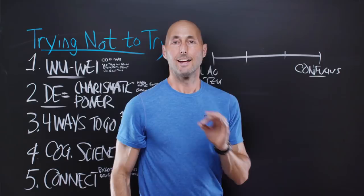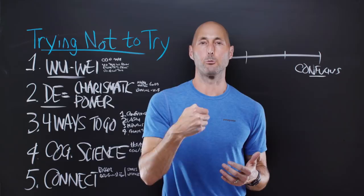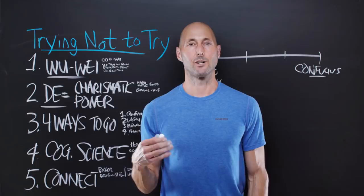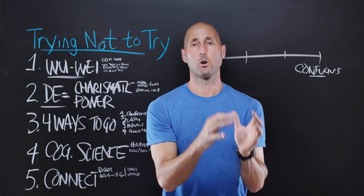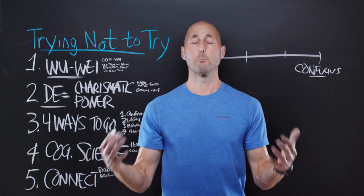Now, Confucius' approach philosophically was, you've got to try really, really, really hard in order to get to a point where you don't need to try. You need to discipline yourself, like polishing a stone or carving a stone. You need to really, really discipline and work on yourself and virtuous living in order to get to a point where the right thing becomes effortless. One approach.